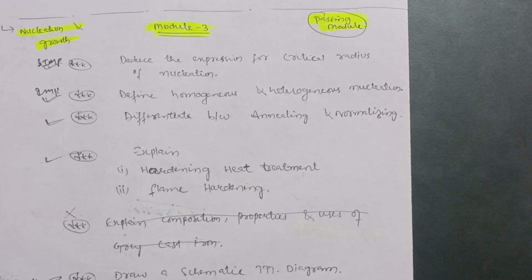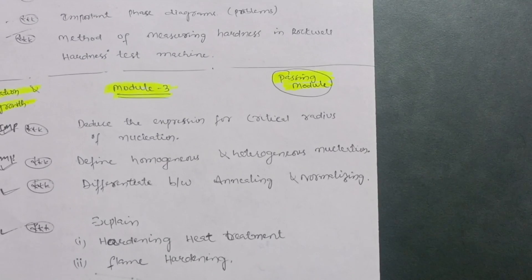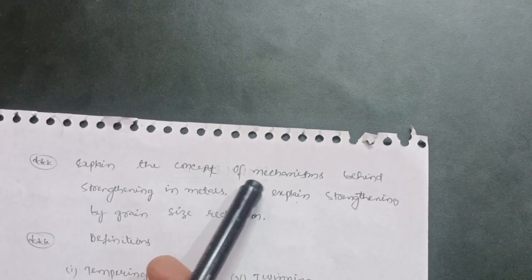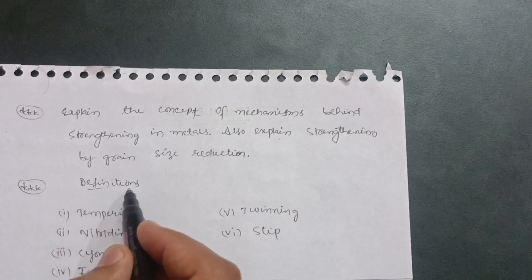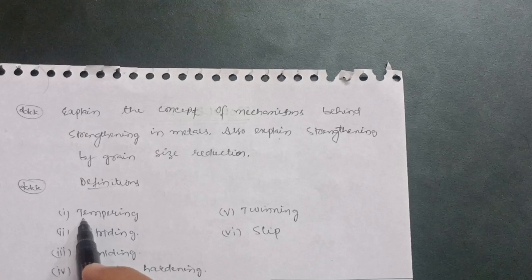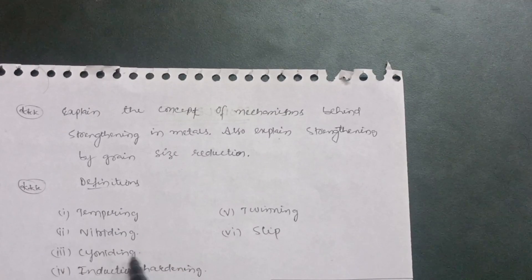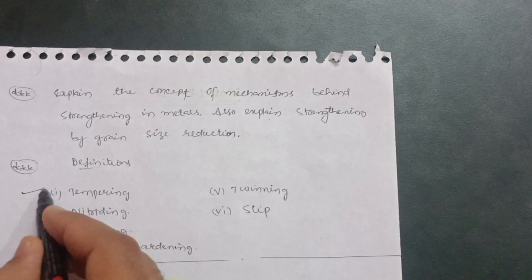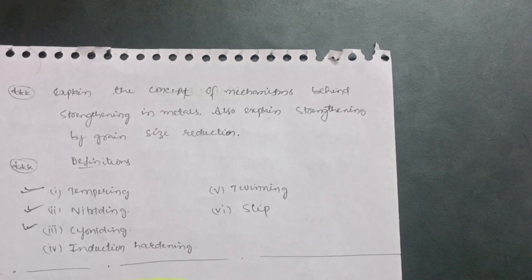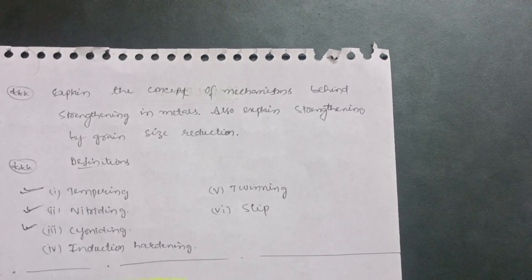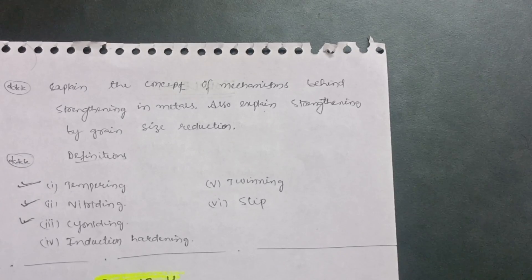These questions will appear in the examination. For Module 3, you should also know two more questions: explain the concept and mechanisms behind strengthening in metals, including strengthening by grain size reduction. Also cover definitions per the syllabus — tempering, austempering, nitriding, cyaniding, induction hardening, and carburizing. These are short definitions you should cover in your own words. These are the three passing modules where you must focus fully.